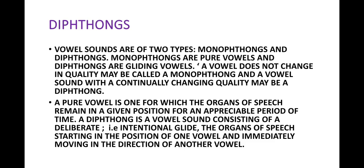Now vowel sounds are of two types: some of them are monophthongs and the others are diphthongs. Monophthongs are actually pure vowels and diphthongs are gliding vowels. This is the main difference between the two, and you have to be able to differentiate between monophthongs and diphthongs.